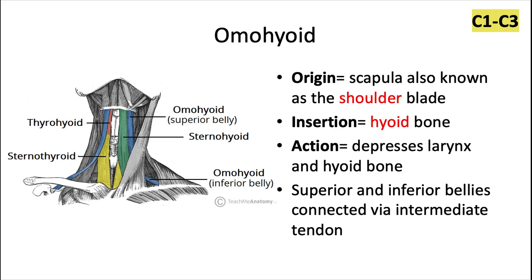The omohyoid originates from the scapula, also known as the shoulder blade. The word 'omos' means shoulder in Greek, so that's where that comes from. This one's innervated by the cervical spinal nerves 1 through 3, which are the branches of the ansa cervicalis.